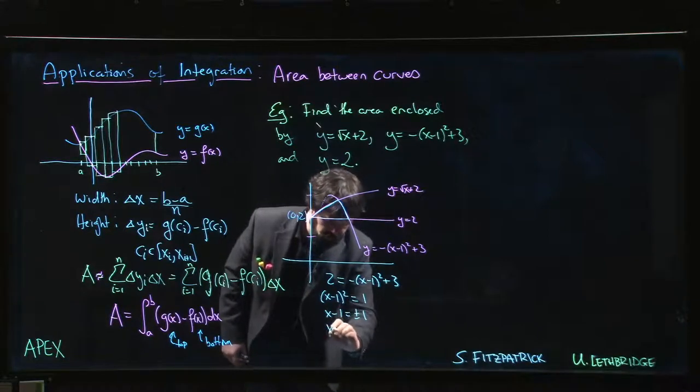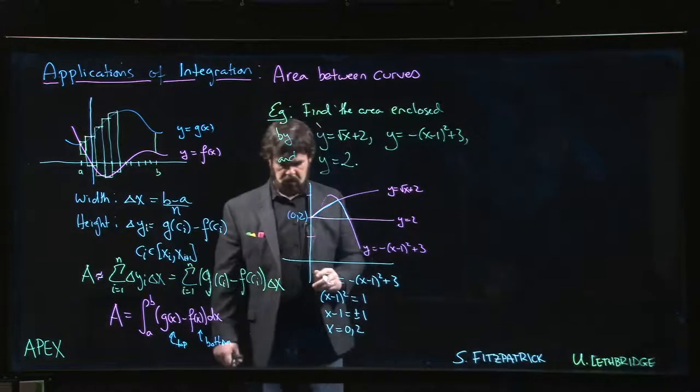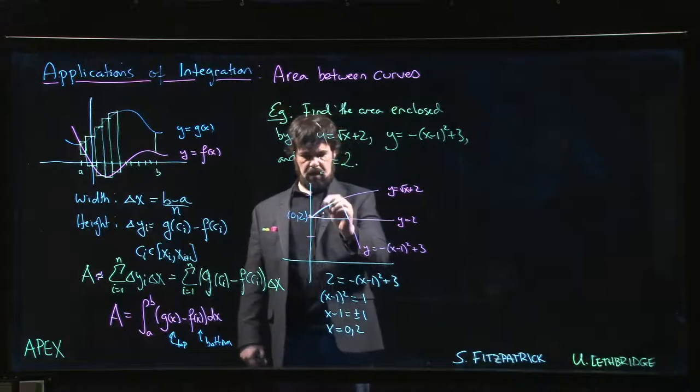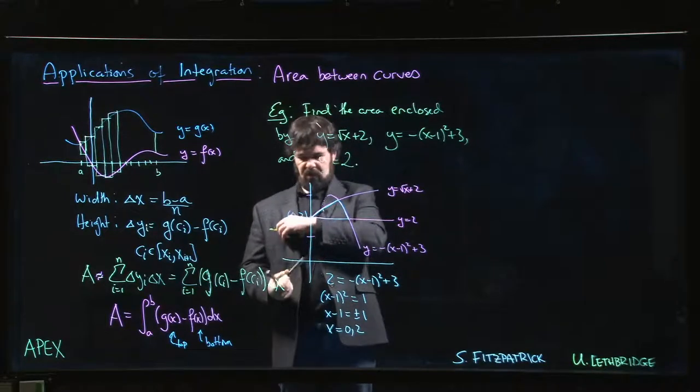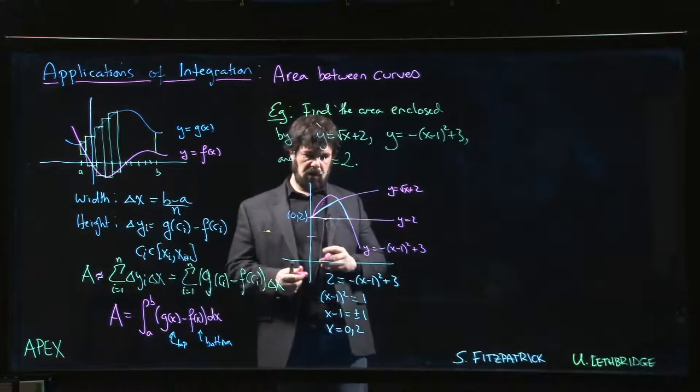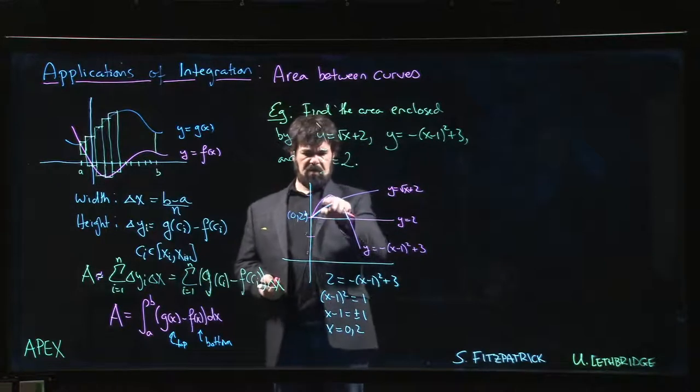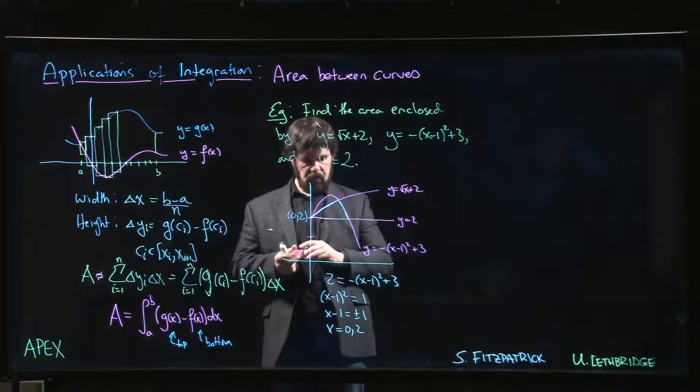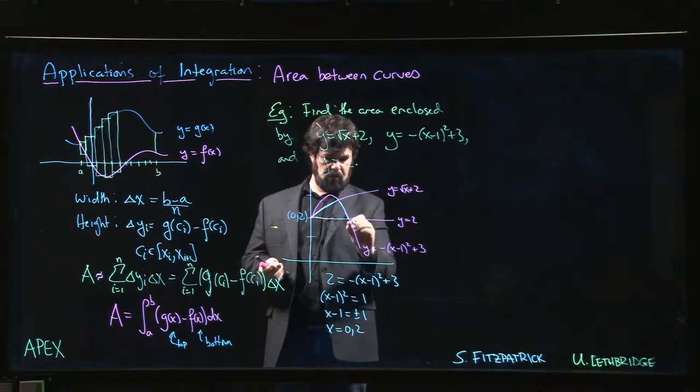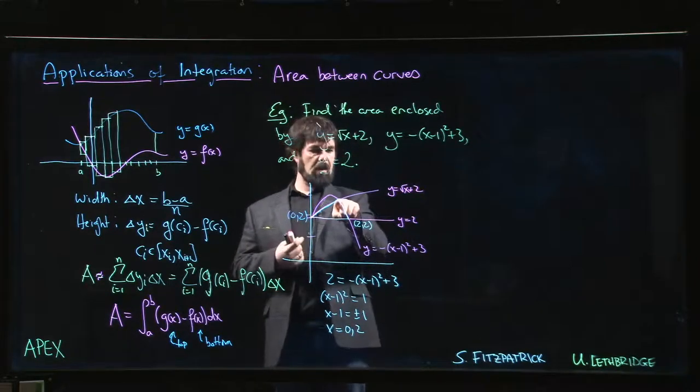So either x is equal to 0 or x is equal to 2. So good, yeah. That other point of intersection, of course if we were drawing the rest of the parabola it would come down like so. We care about this region here, so this is the point of intersection (2,2). And then we have to get this point of intersection up here.